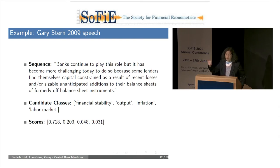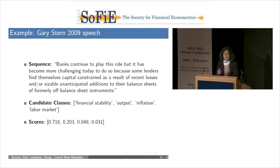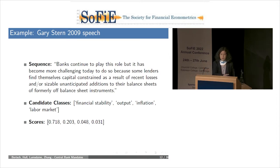As an example of how this works: here's a short passage from a Gary Stern speech from 2009—'Banks continue to play this role, but it's become more challenging today because some lenders find themselves capital constrained as a result of recent losses and sizable unanticipated additions to their balance sheets of formerly off-balance sheet instruments.' We feed the algorithm candidate classes—financial stability, output, inflation, labor market—roughly the aspects of the Taylor rule or the Fed's mandate plus financial stability. The algorithm then scores the text against these classes: 71.8% is attributable to financial stability, and a very small percentage to labor market.